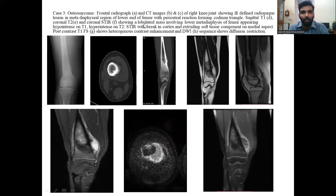Osteosarcoma. Frontal radiograph and CT images of the right knee joint show an ill-defined radiopaque lesion in the metadiaphyseal region of the lower end of the femur with periosteal reaction forming a Codman triangle. Sagittal T1 and coronal T2 STIR images show a lobulated mass involving the lower metadiaphysis of the femur appearing hypointense on T1 and hypointense on T2, with cortical break and extruding soft tissue component. Post-contrast T1 fat-sat images show heterogeneous contrast enhancement, and diffusion-weighted images show diffusion restriction.